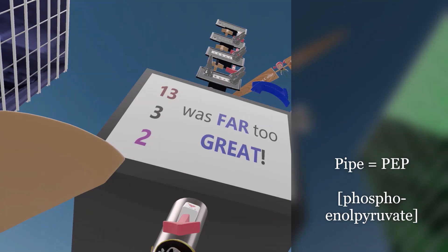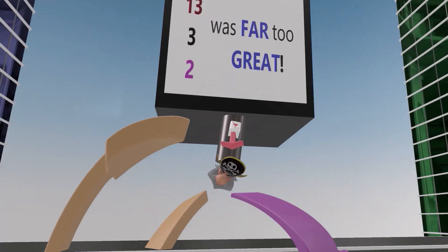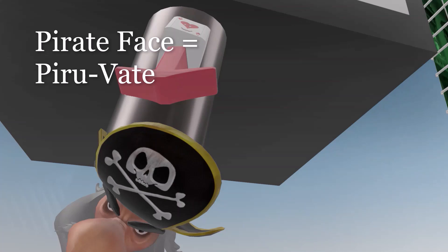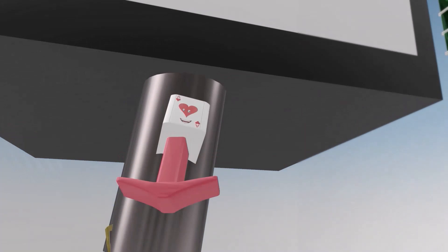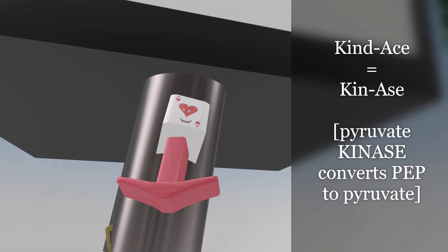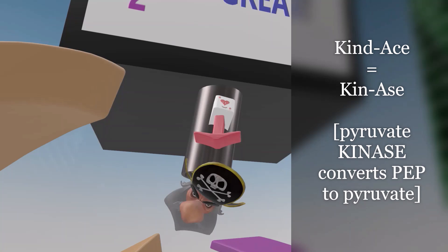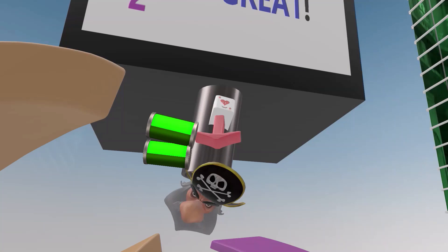A pipe coming out of the box represents PEP — phosphoenolpyruvate — as 2-phosphoglycerate is converted to phosphoenolpyruvate. A pirate face emerging from the pipe represents pyruvate, and the 'kind ace' reappears to remind us that a kinase — specifically pyruvate kinase — performs the conversion of PEP to pyruvate. Two more batteries forming remind us that two ATP are produced during this step.